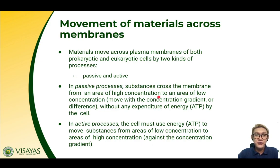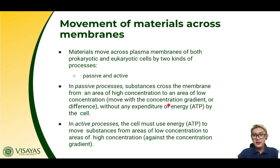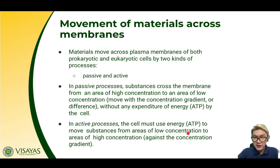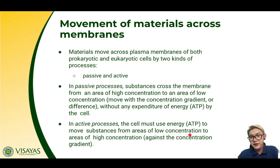How do materials move in and out of the bacterial cell? Materials move across plasma membranes of both prokaryotic and eukaryotic cells via two kinds of processes: passive and active. In passive processes, substances cross the membrane from an area of high concentration to an area of low concentration — the concentration gradient — without the use of energy. In active processes, movement is against a concentration gradient. Just like swimming against the flow of a river, you need a lot of energy.